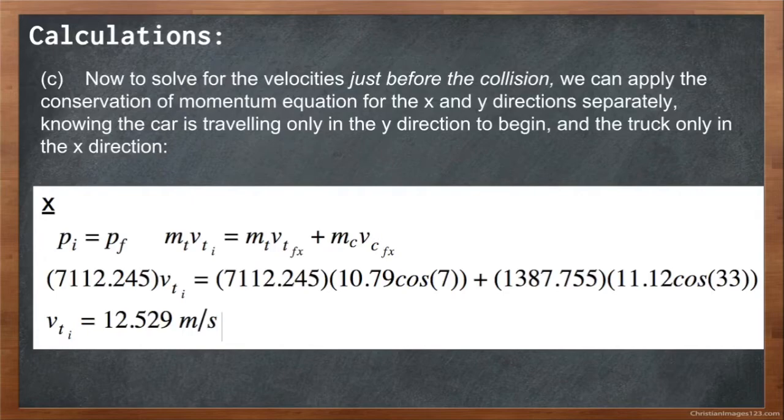Plugging in all of our values, which includes the velocities of both the truck and the car finally, only in the x direction, hence the cosine of its angle, multiplied by its mass, which is simply its weight divided by 9.8, and we solve for velocity of the truck initially, we get 12.529 meters per second.